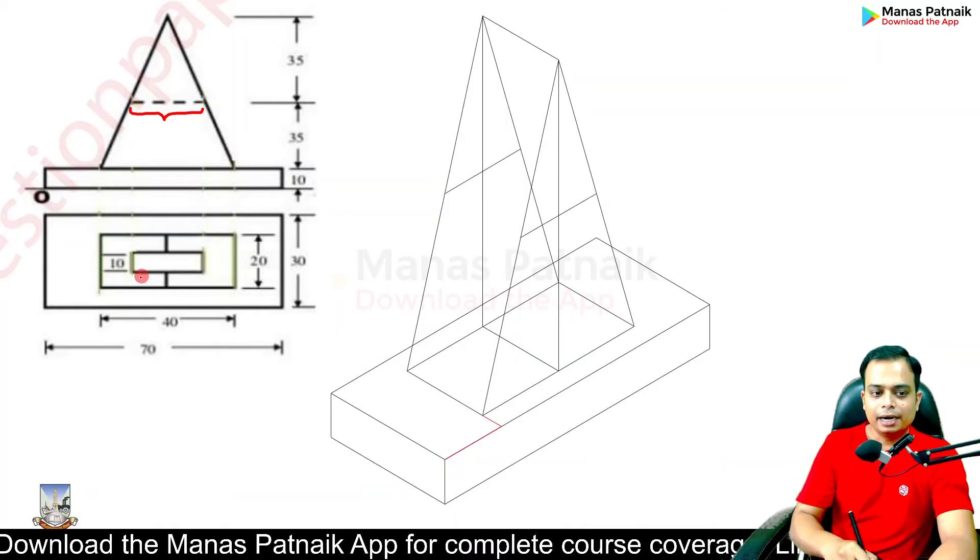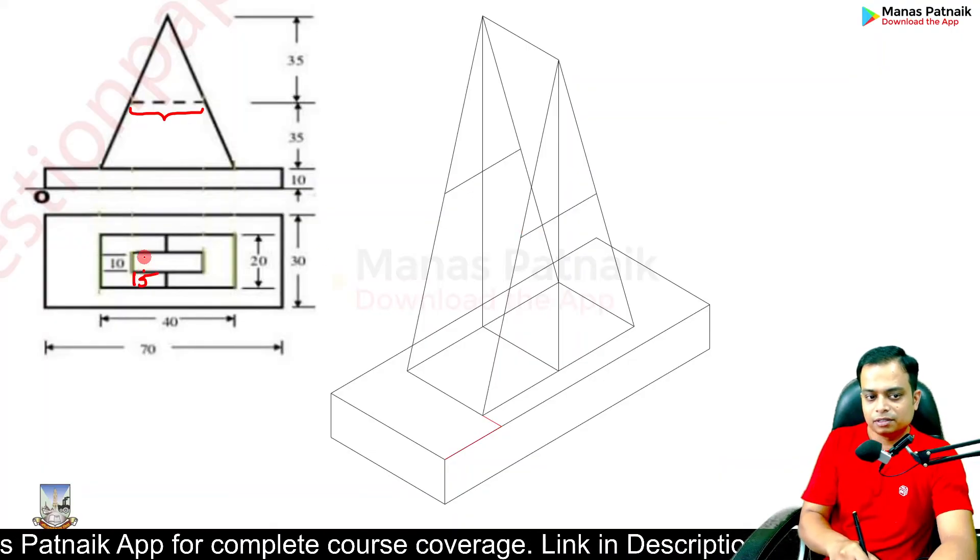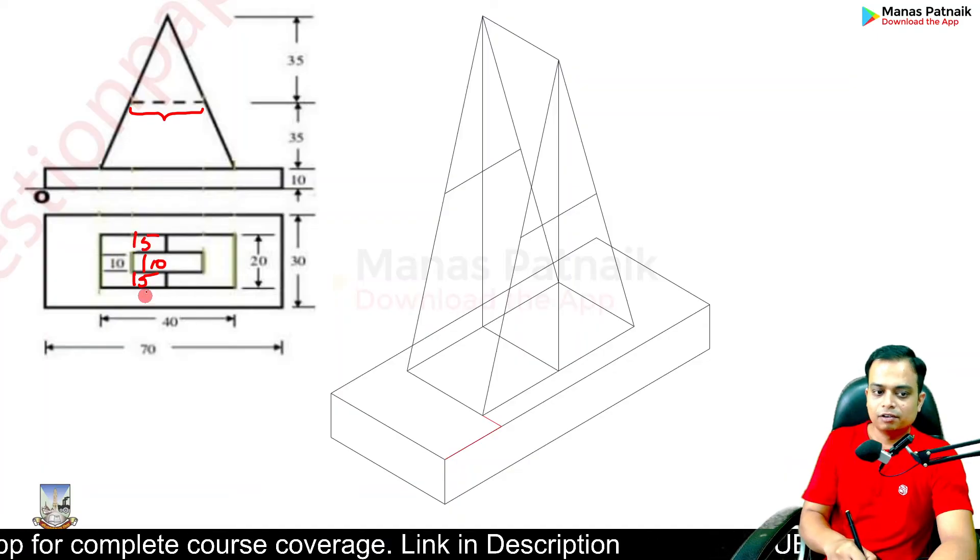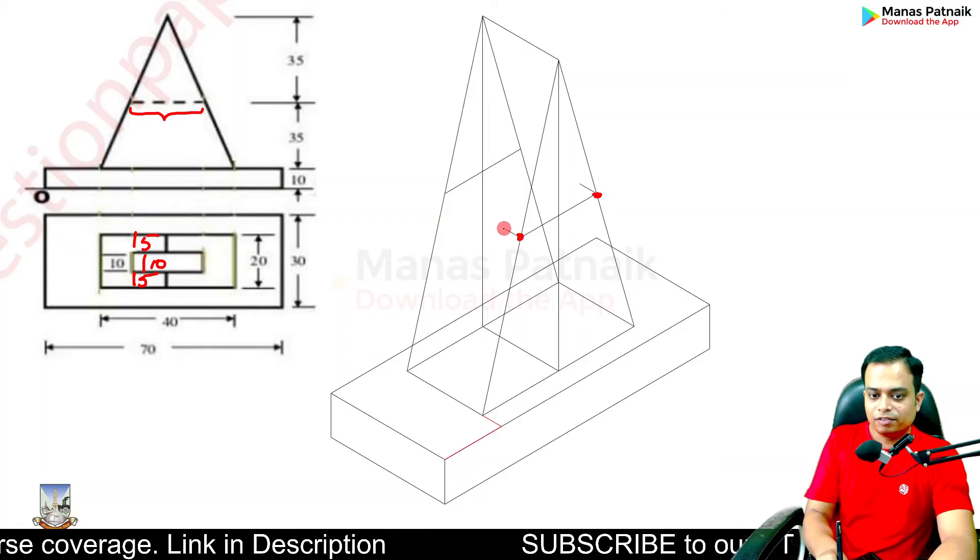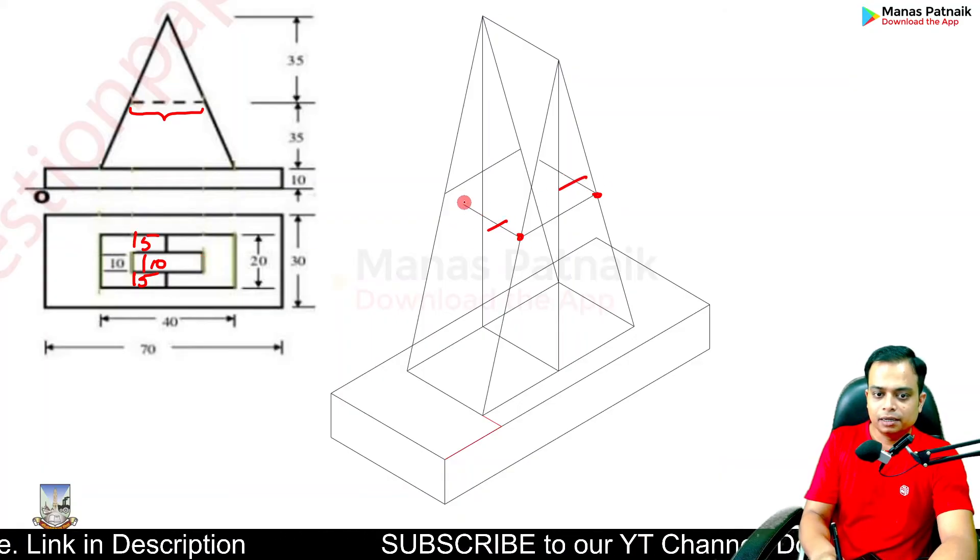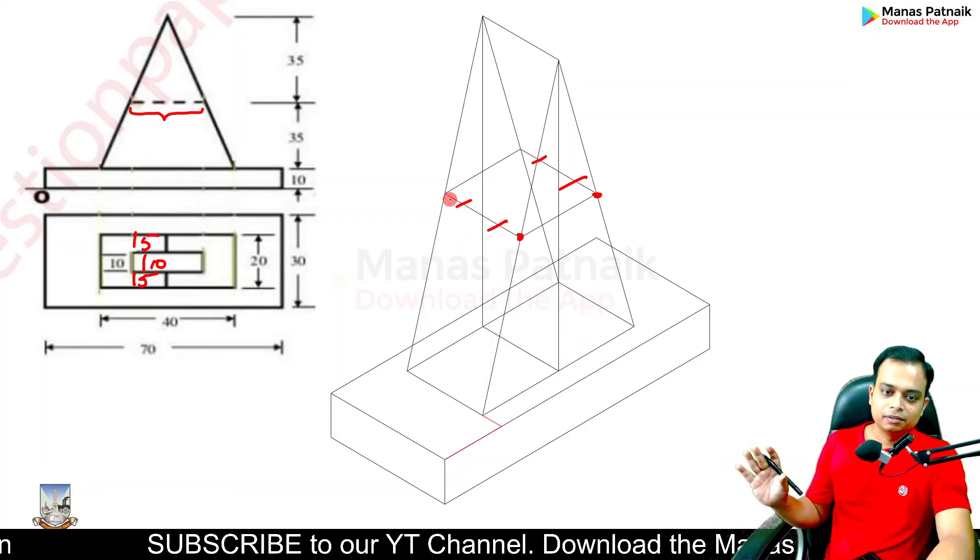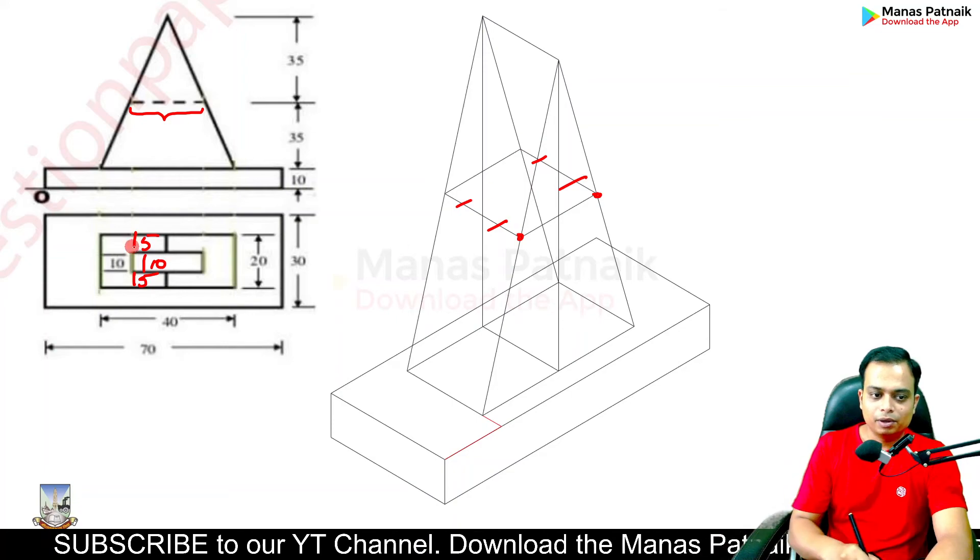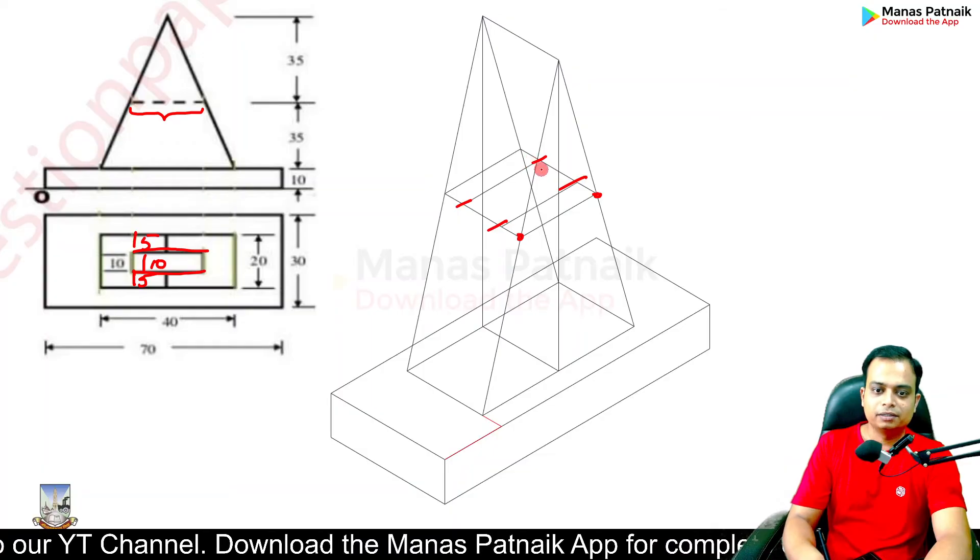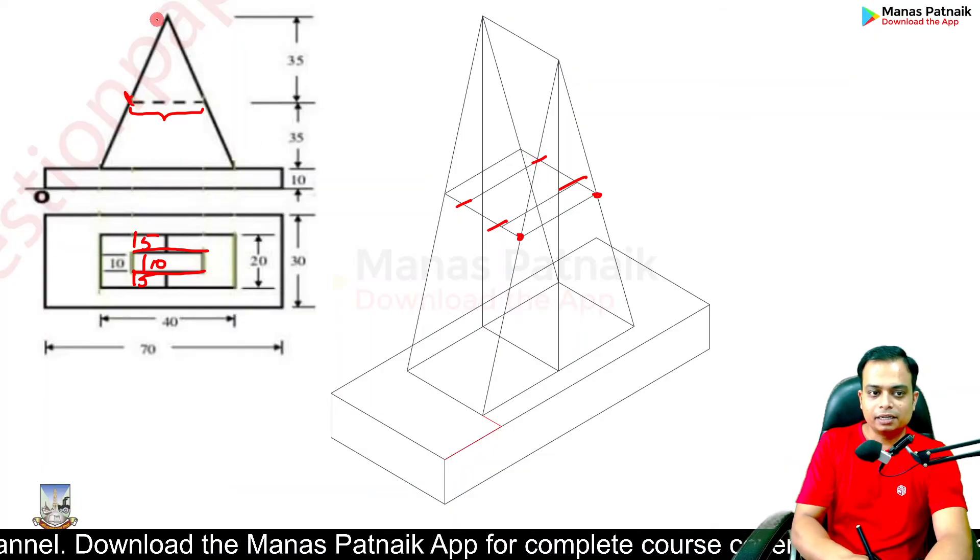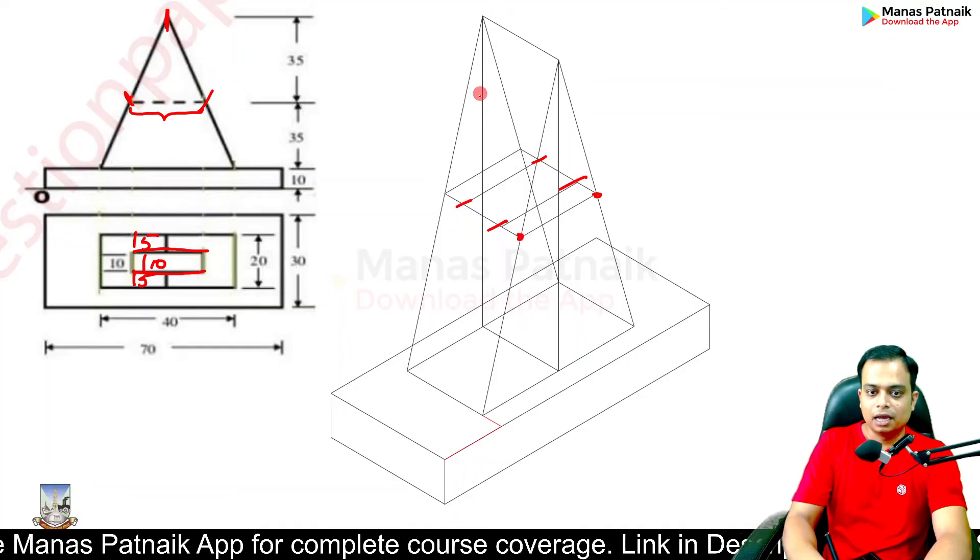And now let's - how much was this? This is 5, this is 10, and this is again 5 - 5, 10, 5. So from both of these locations, 5, 10, and once you enter 5 you are going to reach here exactly.